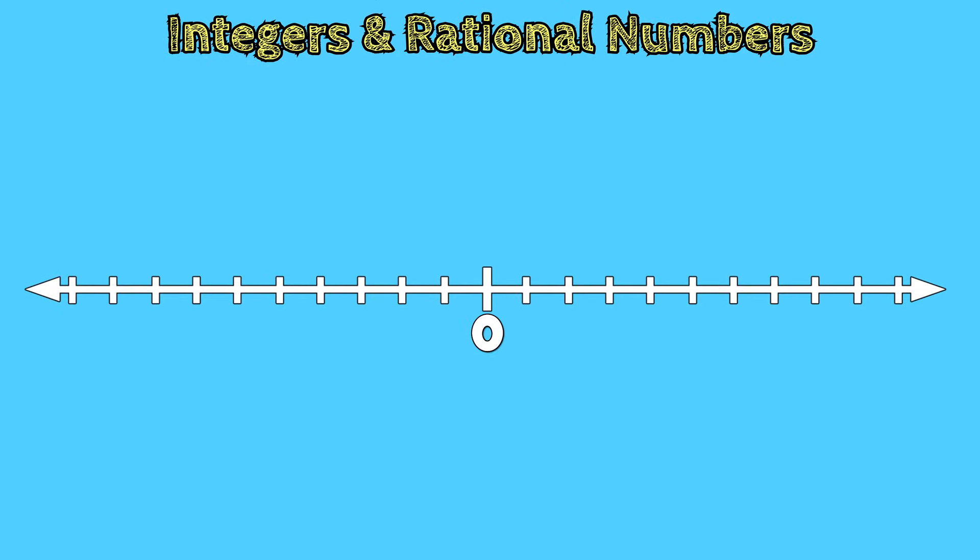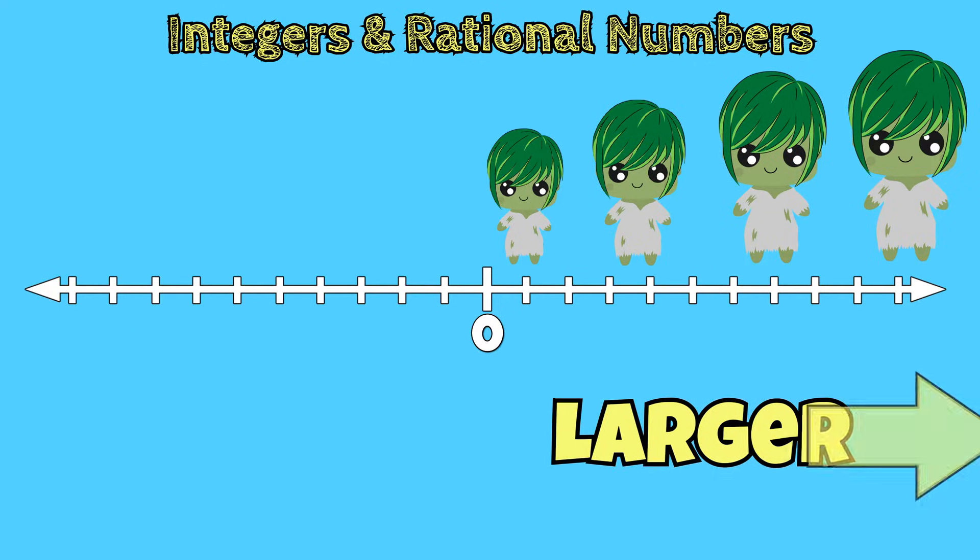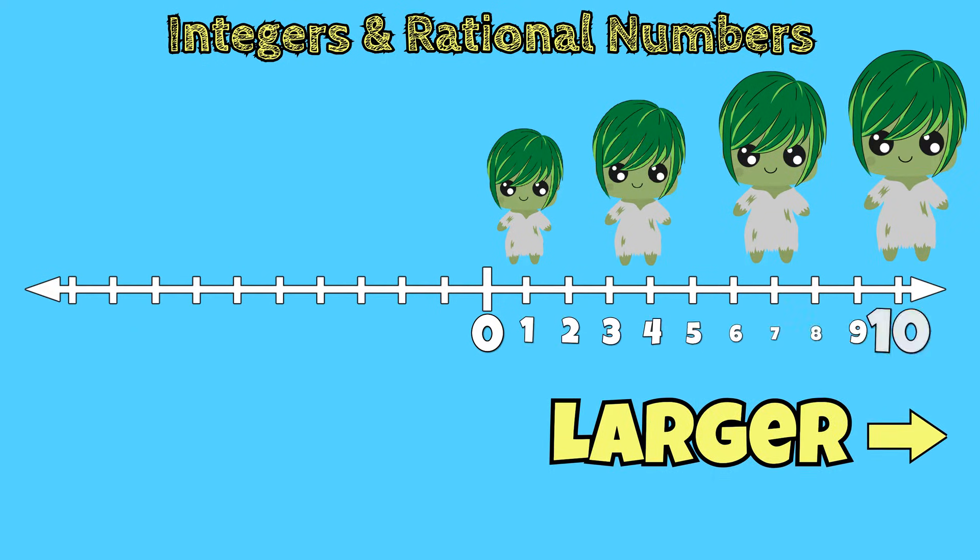If we look at zero on a number line, as we move to the right, our numbers become infinitely larger. We can add a couple of positive numbers to our number line to represent this.